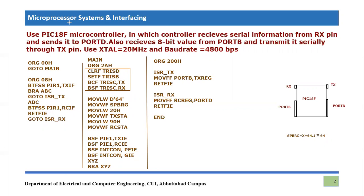In the next section, we move the literal value 64 into the working register and send it into the SPBRG register. This value was derived from the crystal oscillator frequency and baud rate using the formula. Then we move 0x20 into the working register and send it to the TXSTA — the transmit status register — for asynchronous mode of serial transmission.